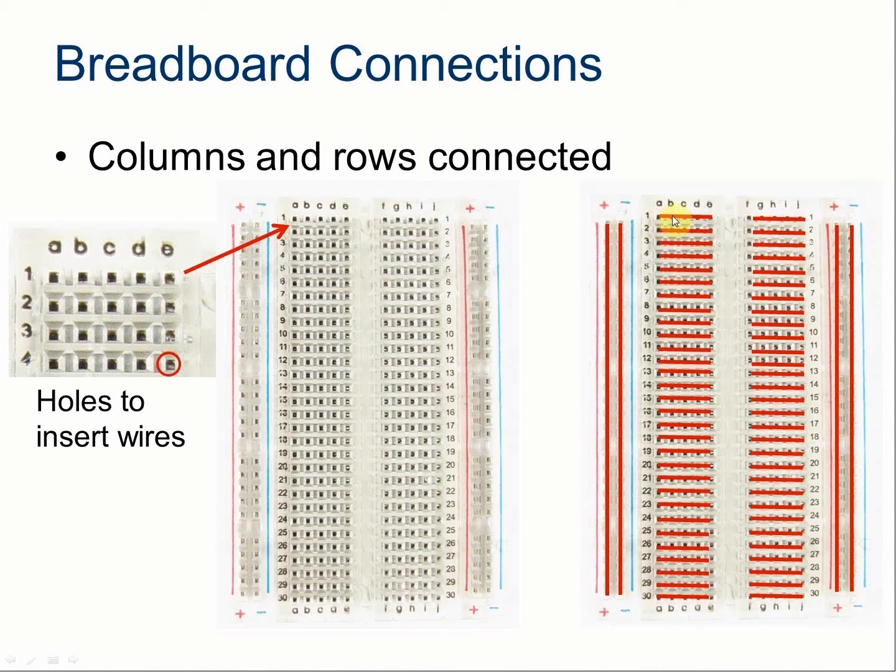Then on the rows, this row here, A, B, C, D, E, is all interconnected. F through J is also interconnected. But F through J is not connected to A through E.